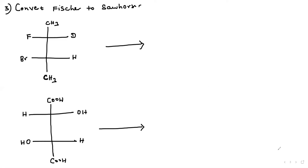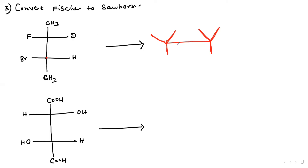The third question: they convert the Fischer projection to a Sawhorse projection directly. This is the first carbon. Students, very important: this type of carbon in a normal Y — normal Sawhorse position — the Fischer converts to the Sawhorse position. Whenever they get the Fischer position to Sawhorse position, when I am going to draw, I draw only the normal Y. Both carbons should be normal Y.